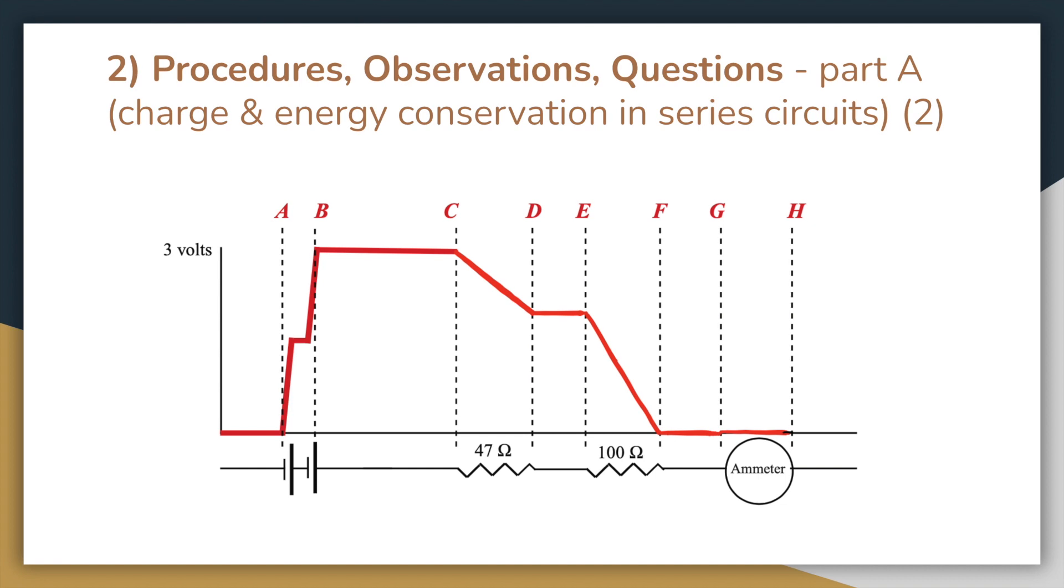The resistors, however, lower the potential, which is why the potential difference across them, which was shown in the previous slide, is negative. The ammeter does not significantly affect the potential as it is assumed to be ideal and therefore has zero or very little resistance.